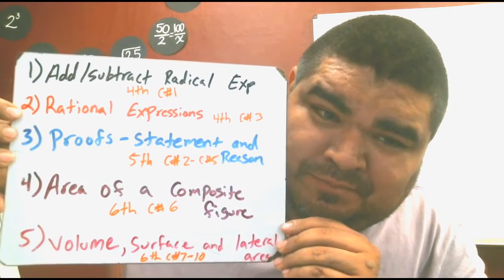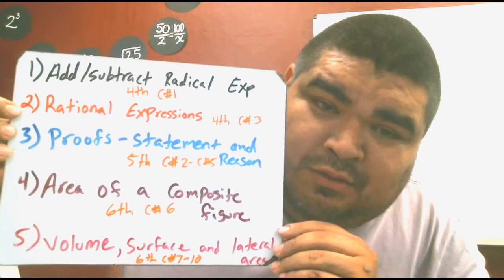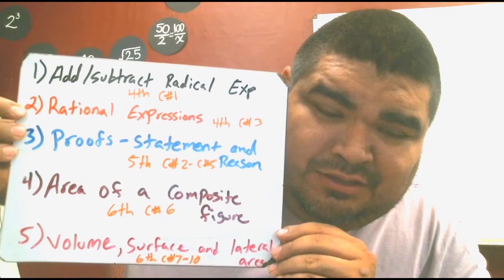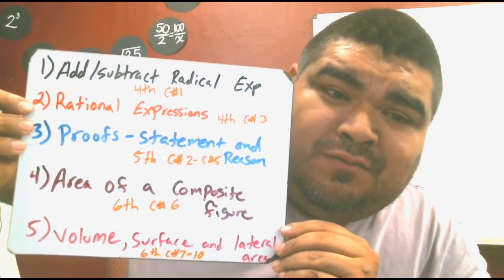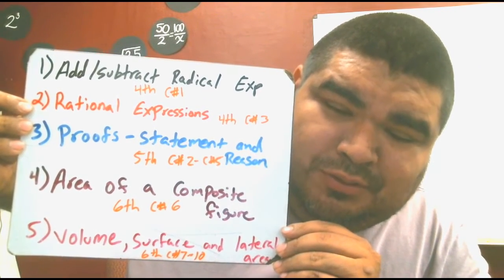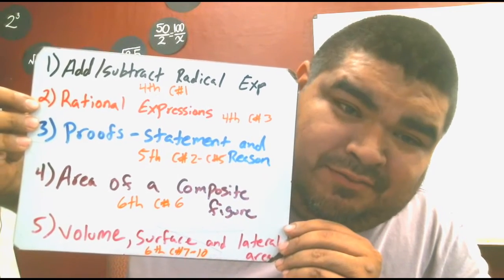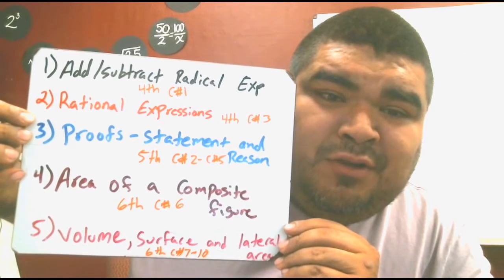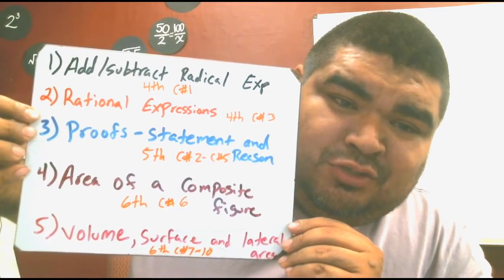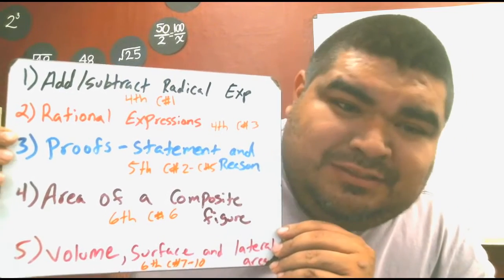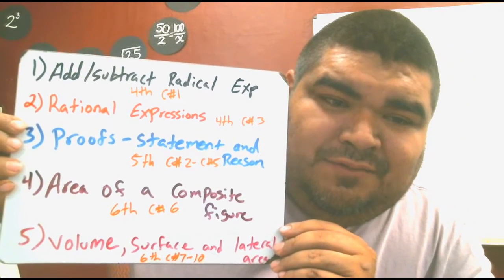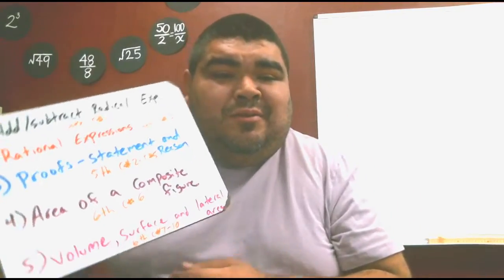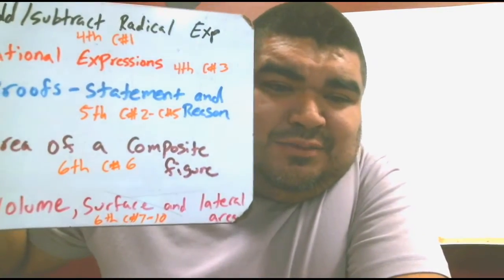Number three: proofs, especially covering proof with statement and reason — look at the videos from the fifth six-weeks, concepts two through five. Number four: area of a composite figure, which was in the sixth six-weeks, concept six. And finally, number five: volume, surface area, and lateral area — sixth six-weeks, concepts seven through ten.